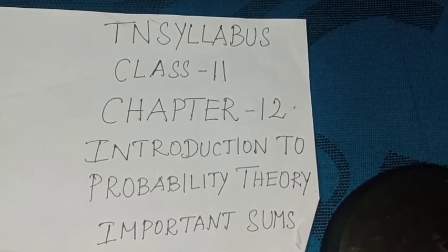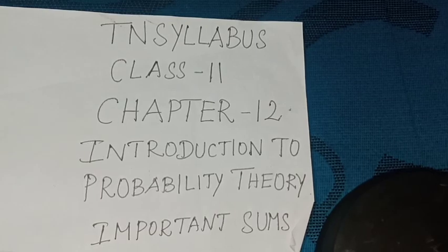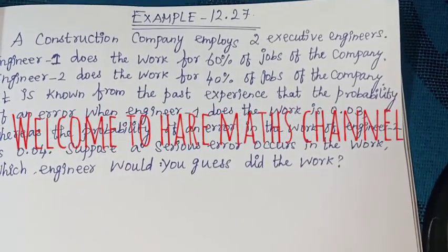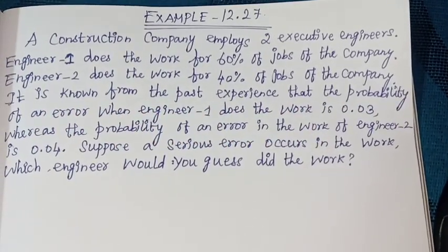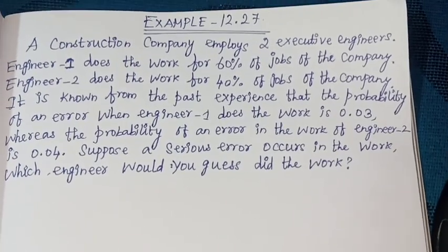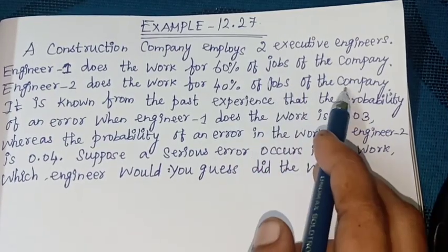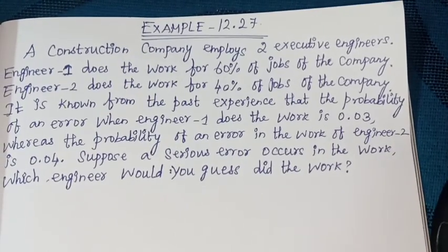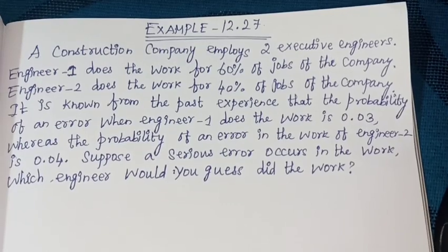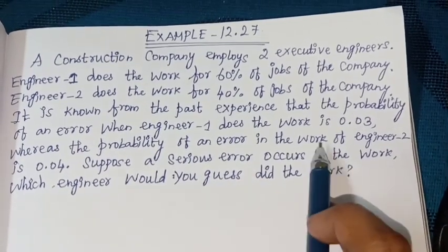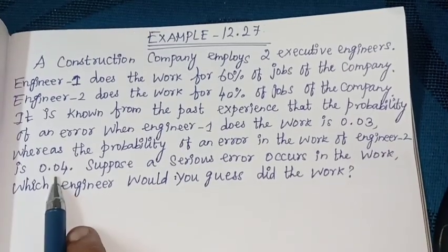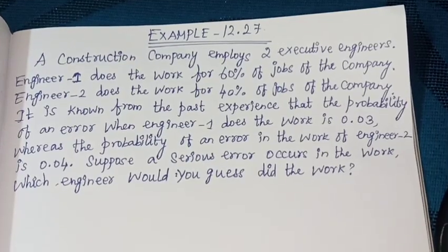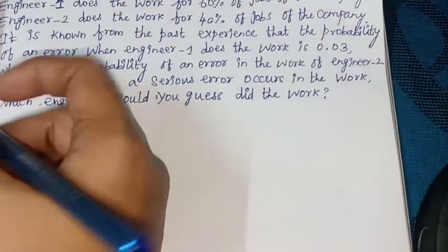Hello students, welcome to Halimax. In syllabus Class 11, Chapter 12, Introduction to Probability Theory, important sums, Example 12.27. A construction company employs two executive engineers. Engineer one does the work for 60% of jobs of the company. Engineer two does the work for 40% of jobs. Suppose a serious error occurs in the work — which engineer would you guess did the work?